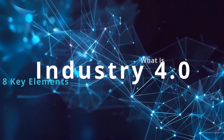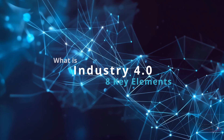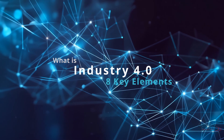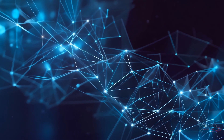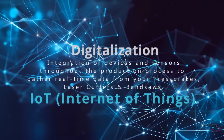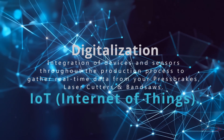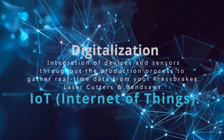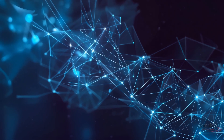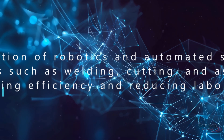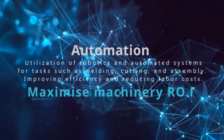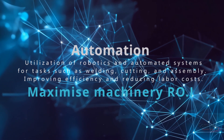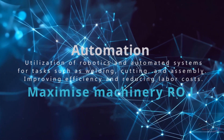What is Industry 4.0? Eight key elements define manufacturing at an Industry 4.0 level. Digitalization: integration of devices and sensors throughout the production process to gather real-time data from your press brakes, laser cutters, and bandsaws. Automation: utilization of robotics and automated systems for tasks such as welding, cutting, and assembly.